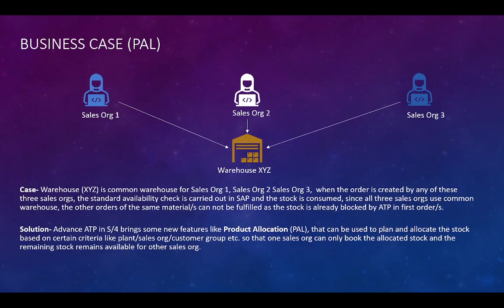So out of whatever remaining stock we have, we can define the quota for each and every team or sales organization based on multiple criteria so that one team can only use their quota. Let's say the total available quantity is 100 and the quota assigned to sales organization one is 40. So in a given month or in a given time period, this organization can only create total orders for that particular material within the given parameter up to that quantity. That's what we are going to see in the Fiori apps — let's go to SAP and see how it is done.